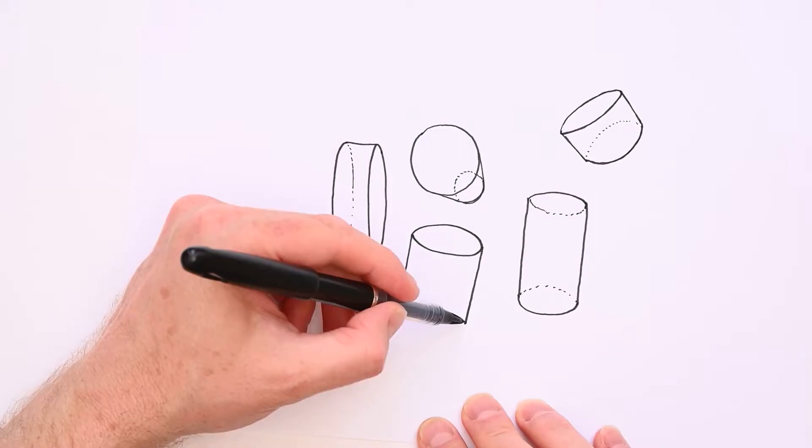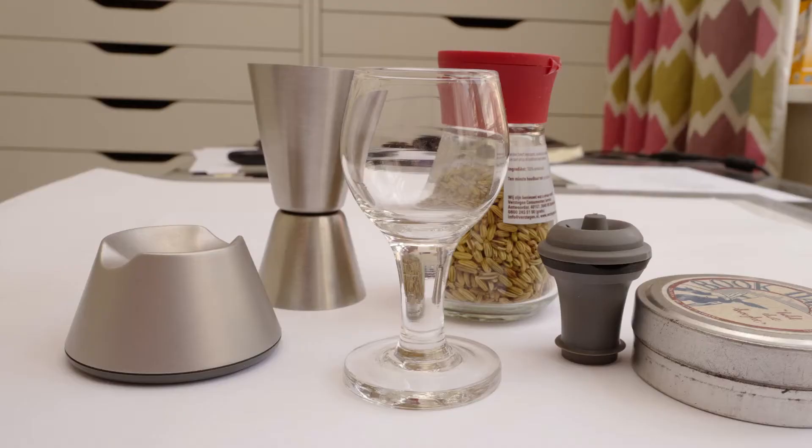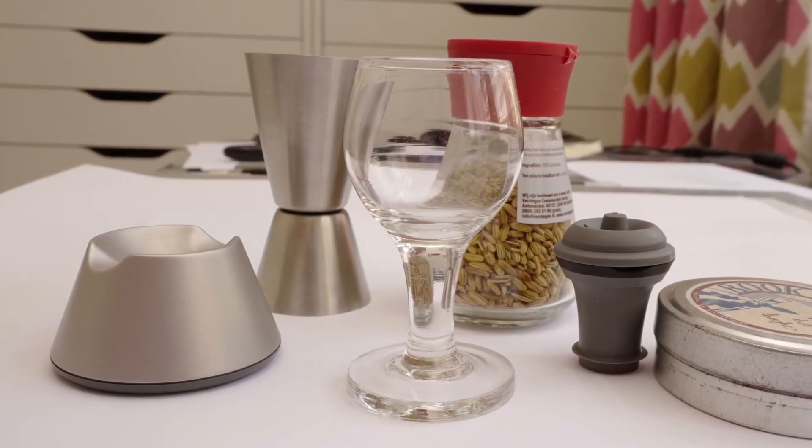Also, many objects like vases, glasses, and bottles have lots of ellipses in them.